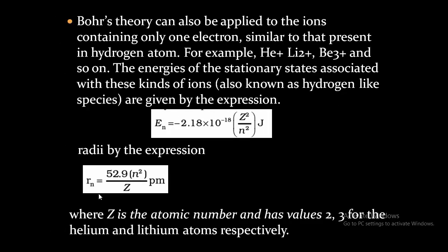The next point is that Bohr's theory can also be applied to ions containing only one electron, similar to that present in the hydrogen atom. Just as we apply Bohr's theory for hydrogen, we can also apply it for ions containing only one electron. The condition is these ions should contain only one electron, similar to that present in the hydrogen atom.